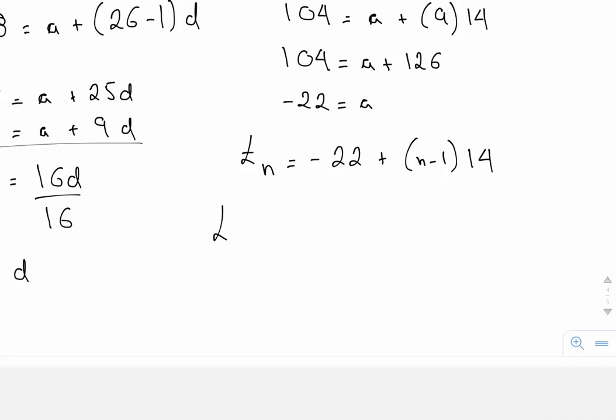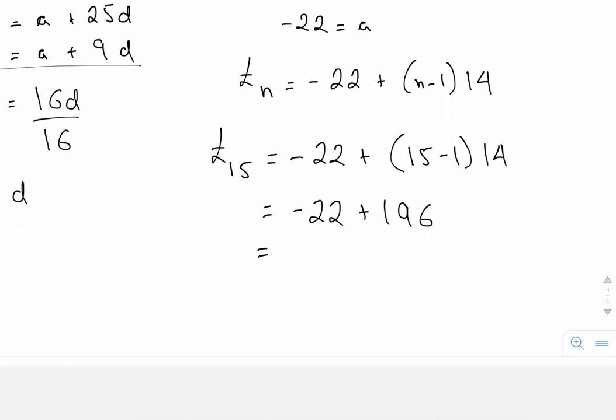And to find the specific term, T sub 15, this is just a simple substitution here of replacing n with 15, subtracting 1, multiplying that by 14. Let's see what we get. So we get negative 22 plus 14 times 14 is 196.